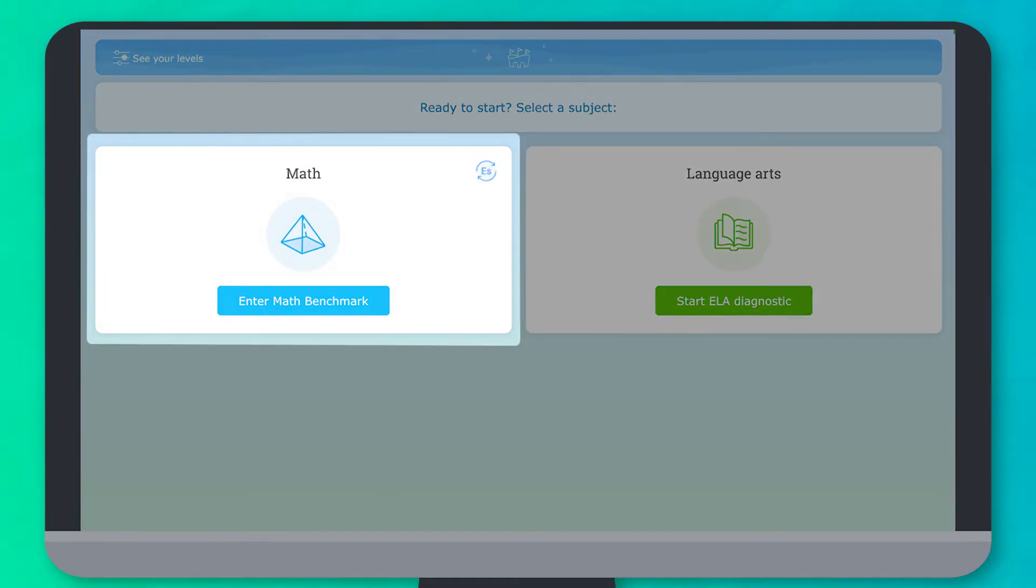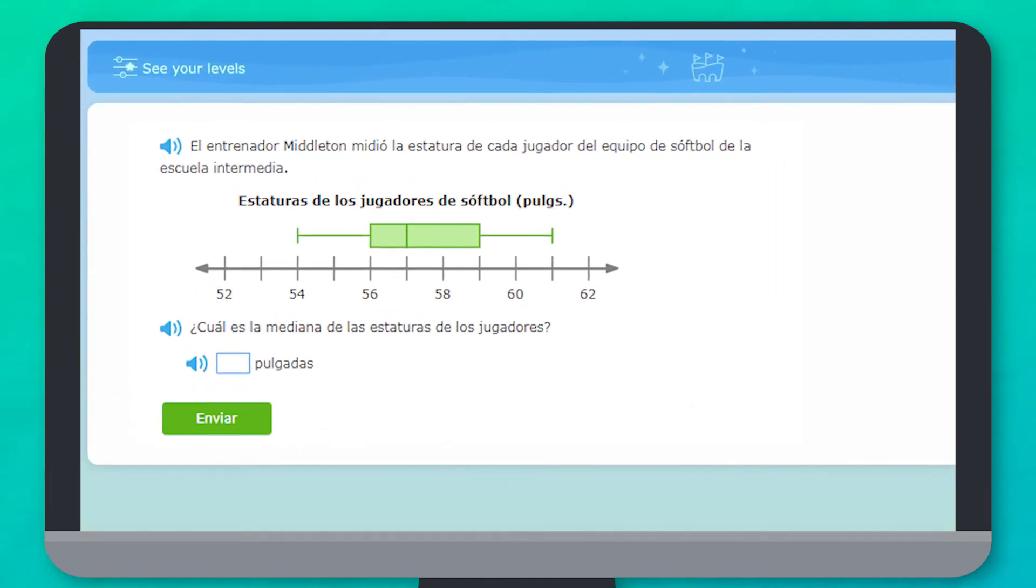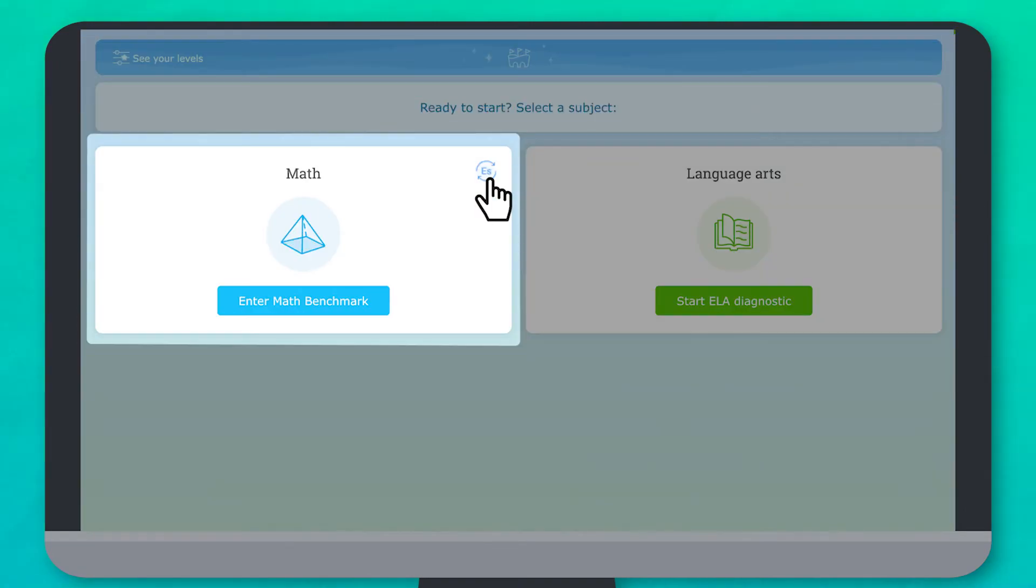If you'd like to take the Math Benchmark in Spanish, you can click the ES button. However, once you start the assessment, you won't be able to switch back to English, so only click ES if you're sure.